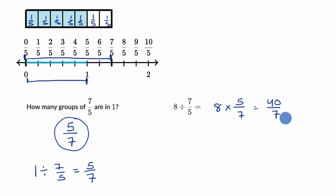And we're done. You could obviously also write that as a mixed number if you like. This would be the same thing as five and five-sevenths.